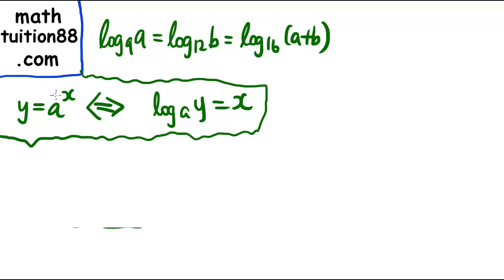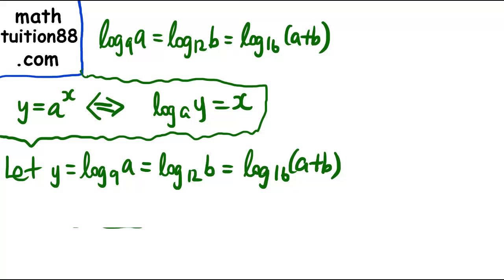How to transform from logarithm form to exponential form. So we will make a suitable substitution. We will let y = log₉a = log₁₂b = log₁₆(a+b). So this is one of the strategies for Singapore math high school level. We have to make a suitable substitution which will enable us to solve the question.